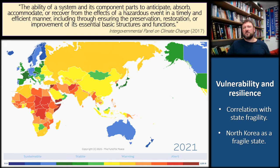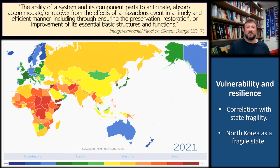The threat multiplier effect is always worse in countries that have low resilience to environmental shocks. The Intergovernmental Panel on Climate Change defines resilience as the ability of a system and its component parts to absorb, anticipate, accommodate or recover from the effects of a hazardous event. High resilience is closely correlated with GDP and institutional stability, and conversely, low resilience is correlated with state fragility. This is illustrated here with the Fragile States Index, updated annually by the NGO Fund for Peace — note how poorly North Korea ranks in terms of state fragility.